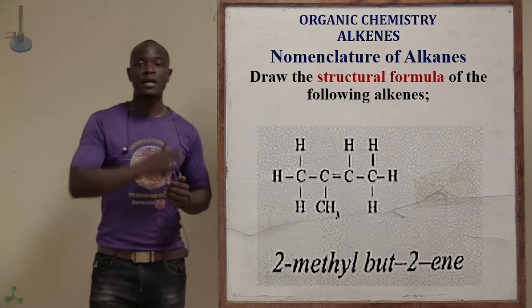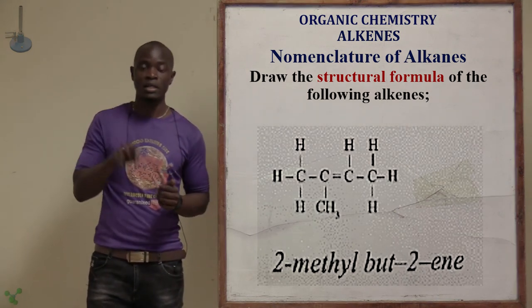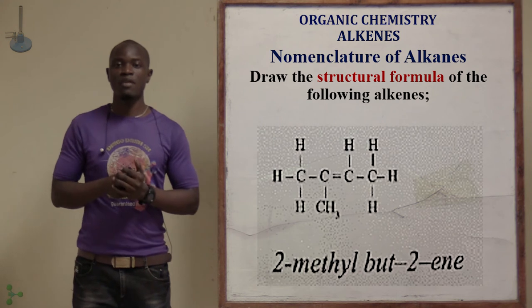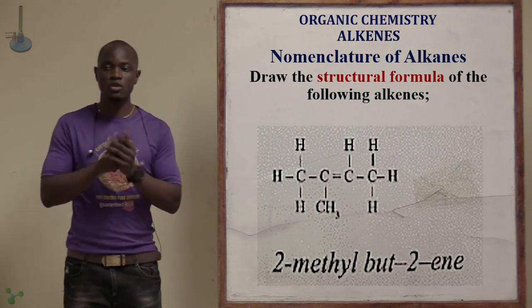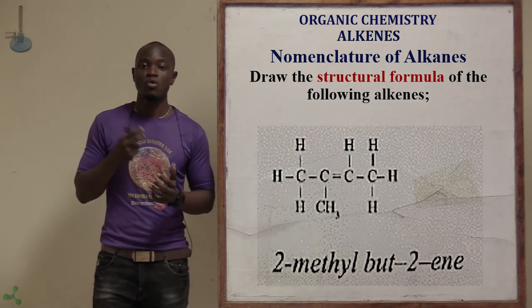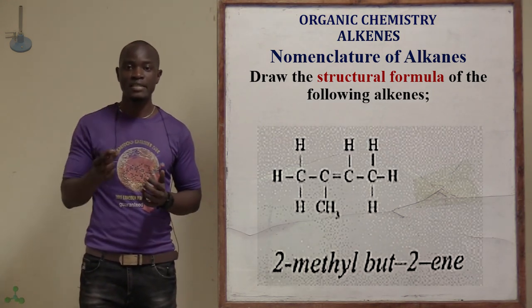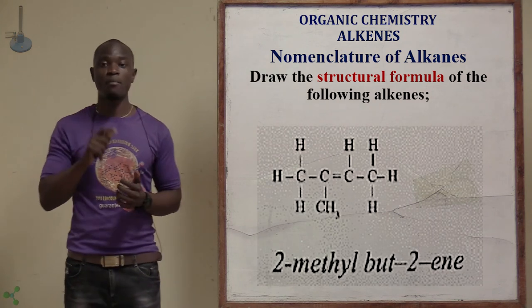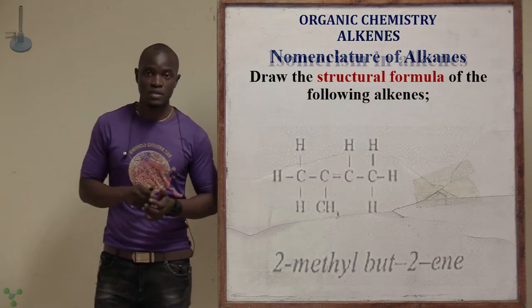The longest chain is bute (B-U-T), meaning we have four carbon atoms in the parent chain.